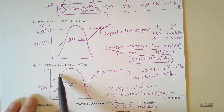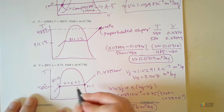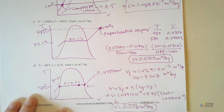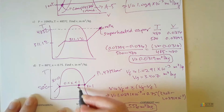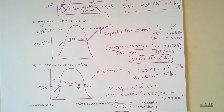To locate our state on the TV diagram: our quality is 0.75, so we're about three-quarters of the way from the saturated liquid line to the saturated vapor line — roughly here inside the dome. Hopefully that was a good start to our examples. We're going to have more in the next video, and if you're still not sure how to do this, hopefully the next video will clear that up.